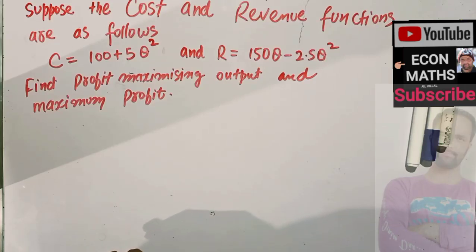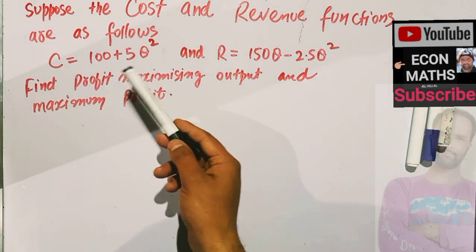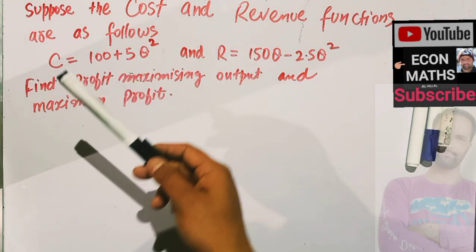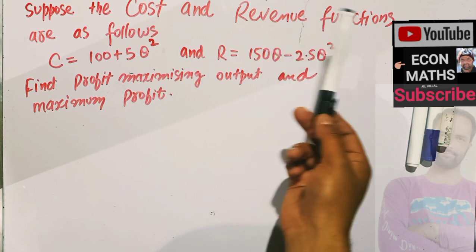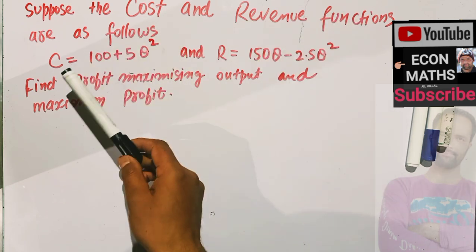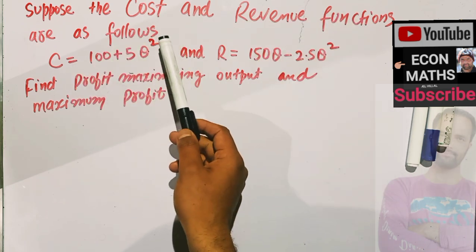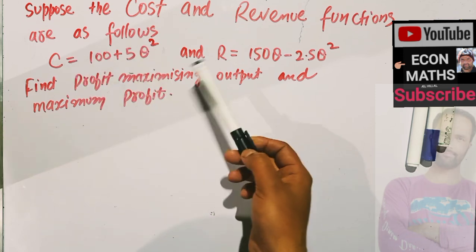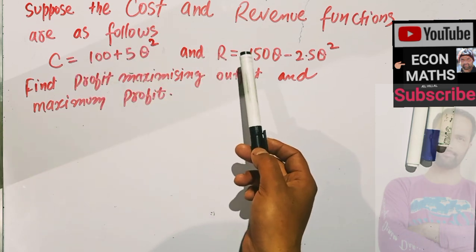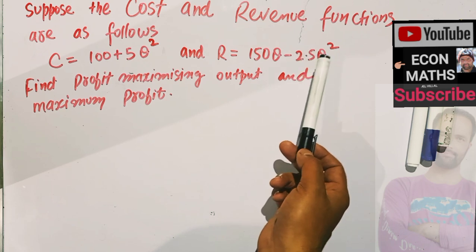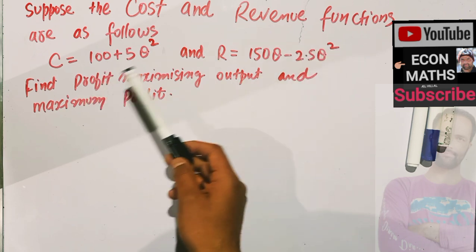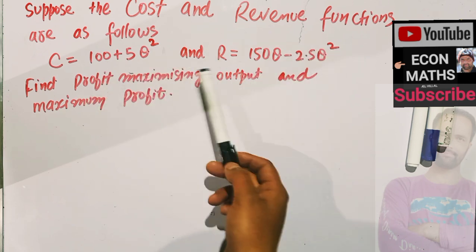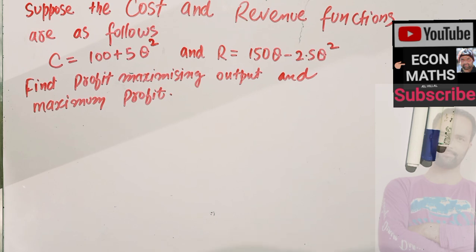In this video we will solve a numerical problem on how to find profit maximizing output and maximum profit from the given cost and revenue functions. The question is: suppose the cost and revenue functions are as follows — C is equal to 100 plus 5q squared, where C is the total cost and q denotes the output, and the revenue function is given as 150q minus 2.5q squared. Find profit maximizing output and maximum profit.